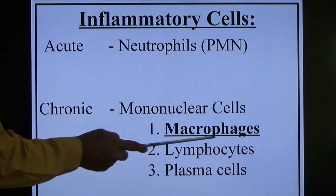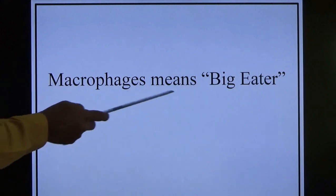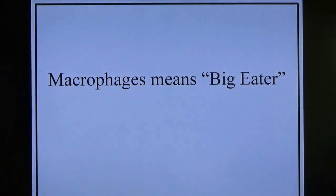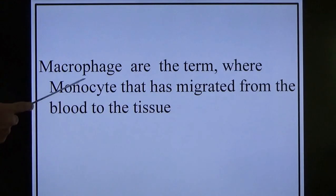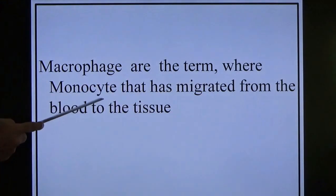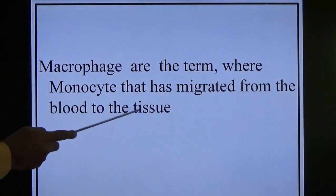Questions will come about what are macrophages. The word meaning is 'big eater.' Now, where are macrophages present? We have studied RBC, WBC, and platelets as blood cells, but macrophages — where are they? Macrophages are monocytes that have migrated from the blood to the tissues.